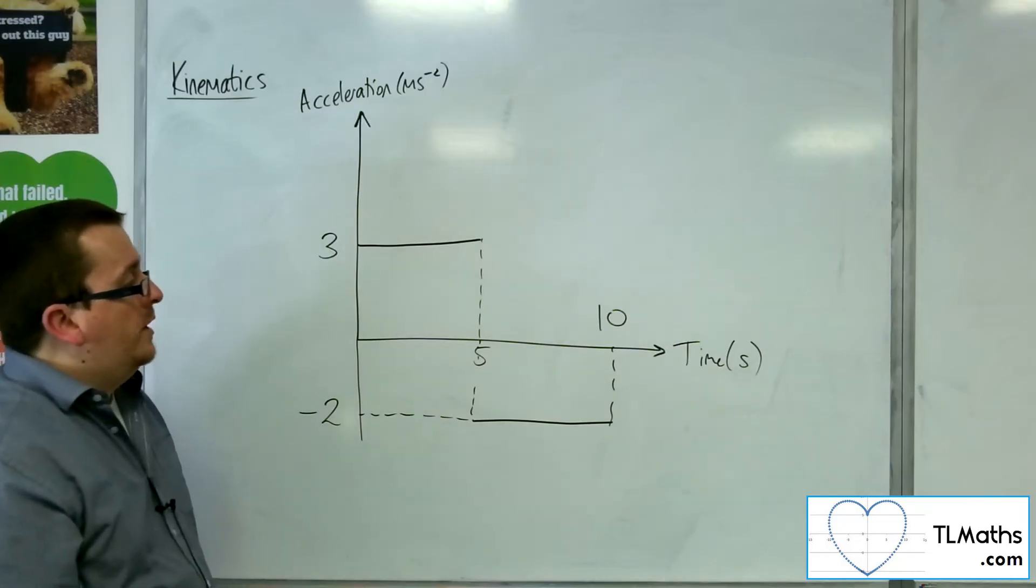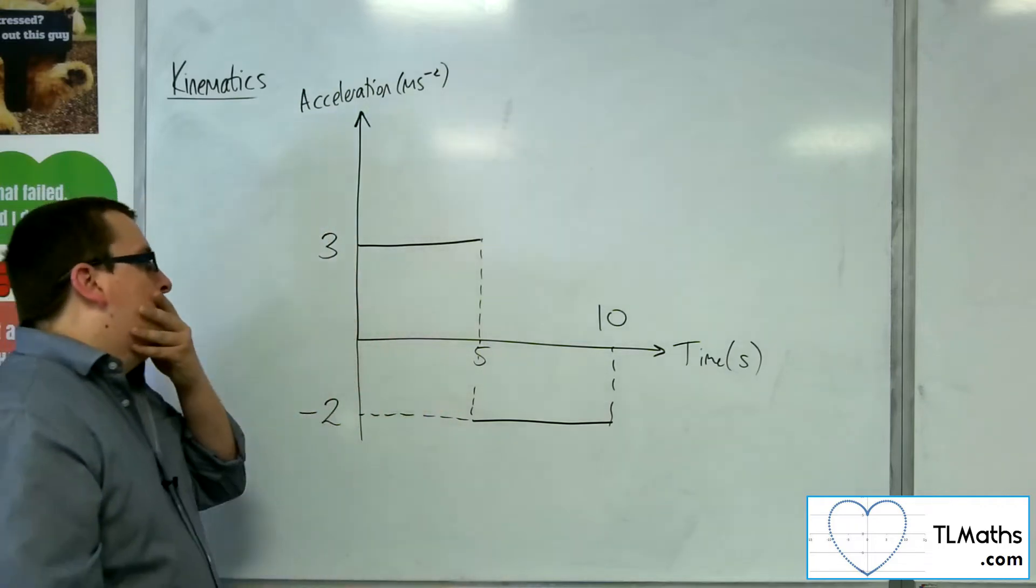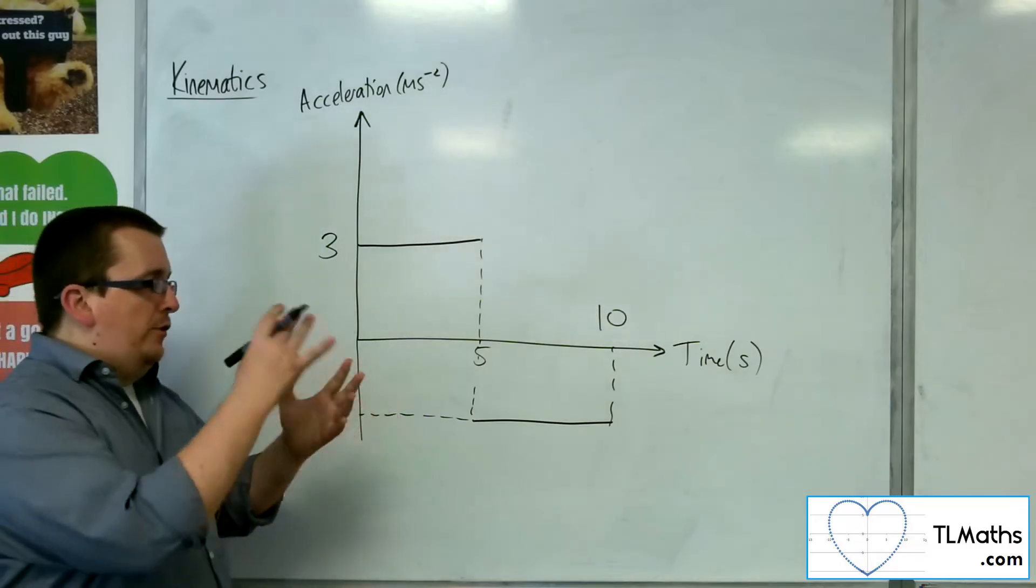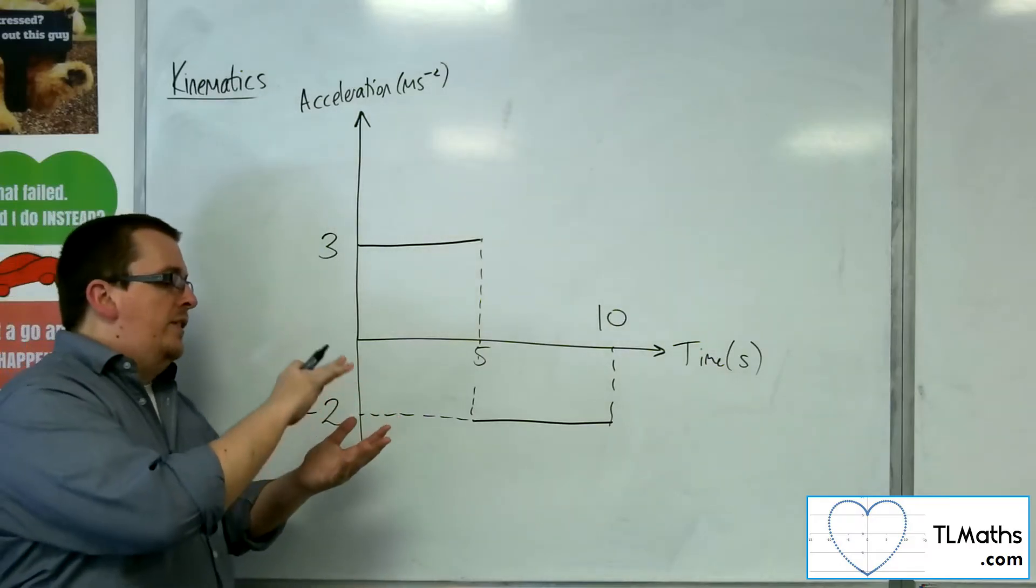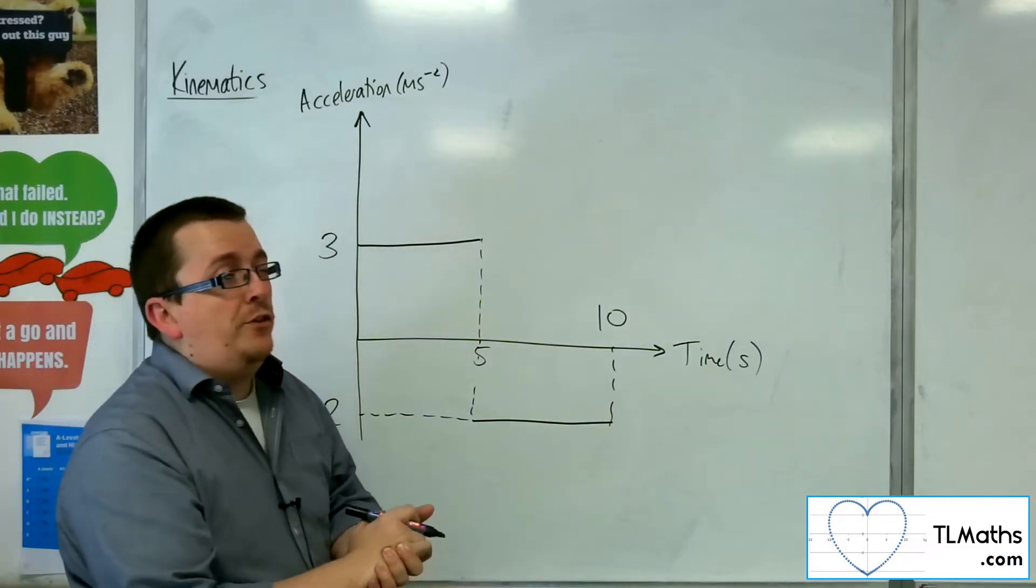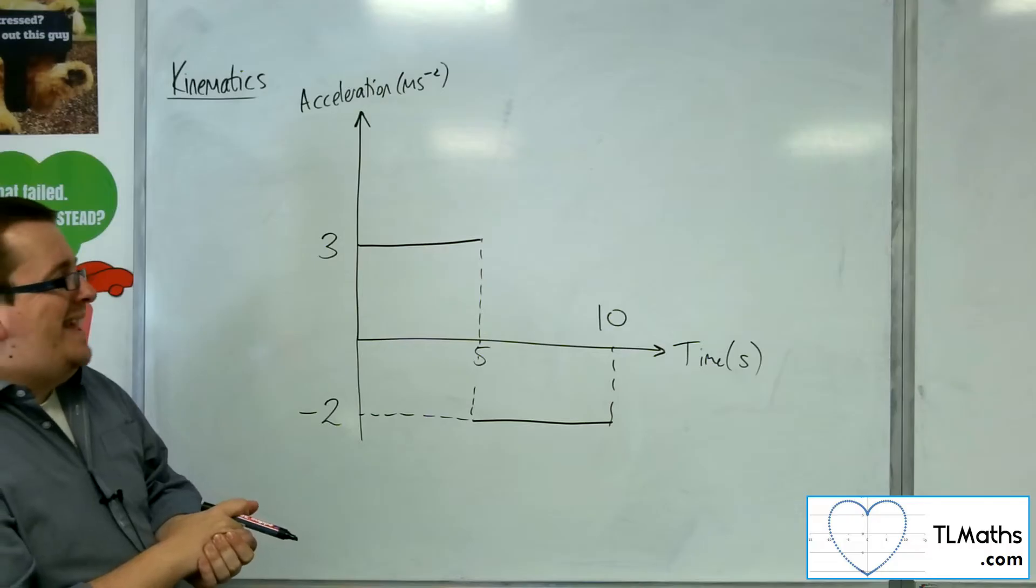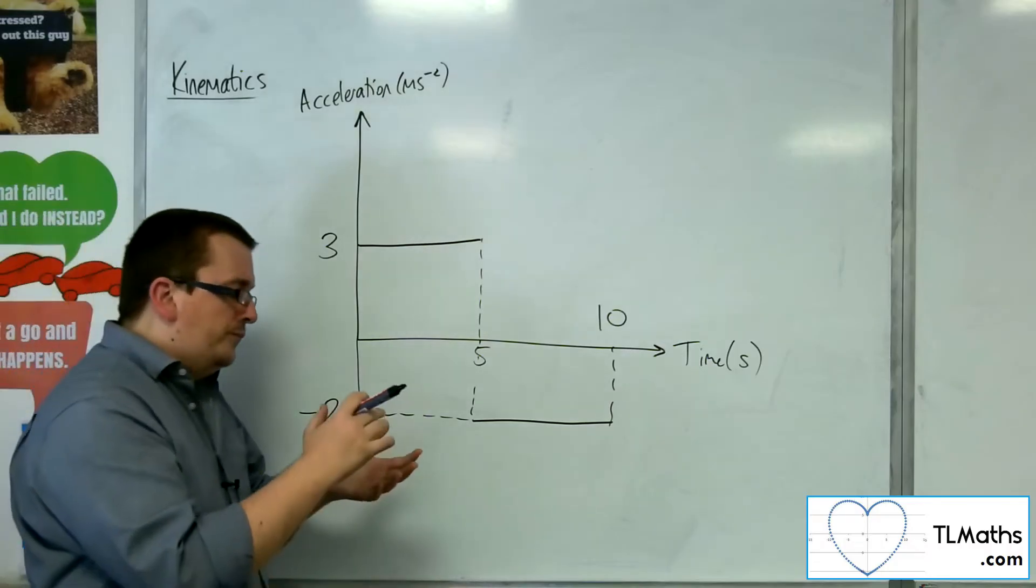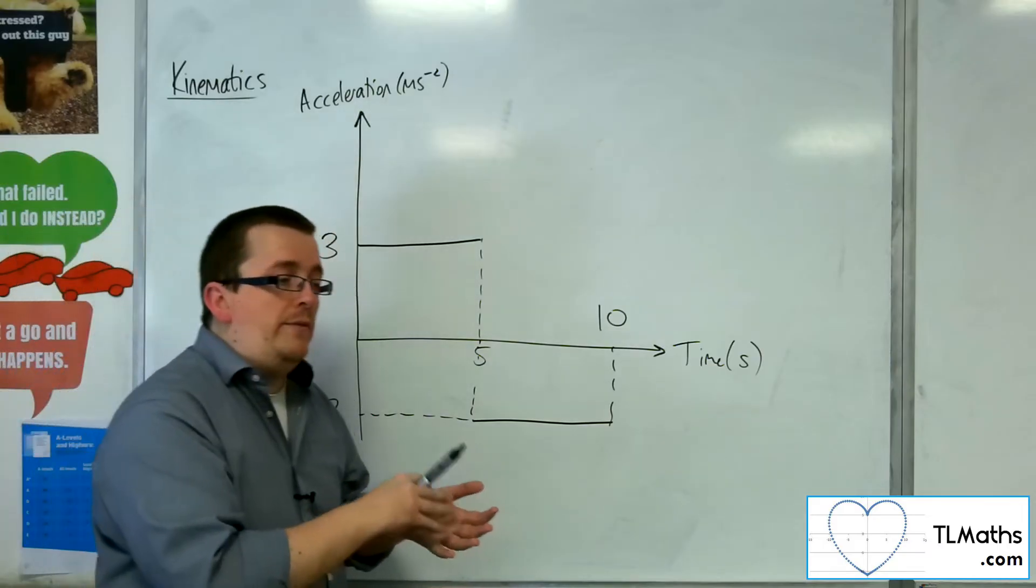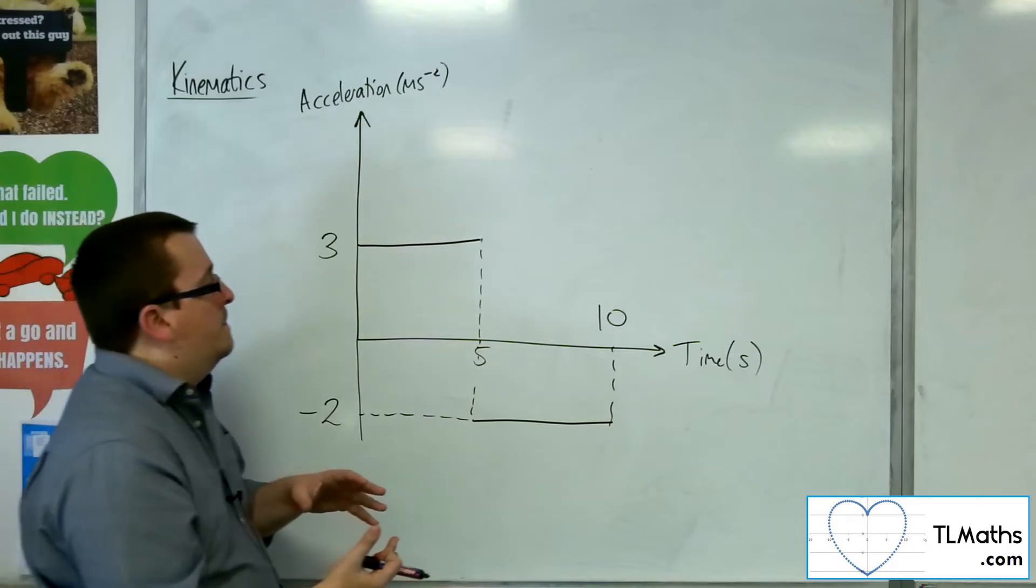So what kind of information can you gain from this? Well, what we found with displacement-time was that the gradient of the displacement-time gave us the velocity. And then, once we'd done that for velocity-time, the gradient of velocity-time gave us acceleration, and the area gave us displacement.